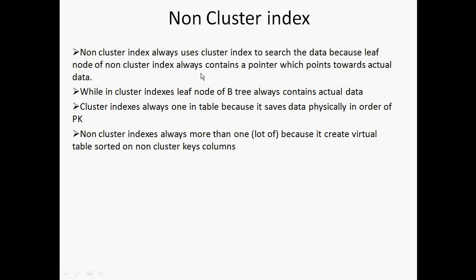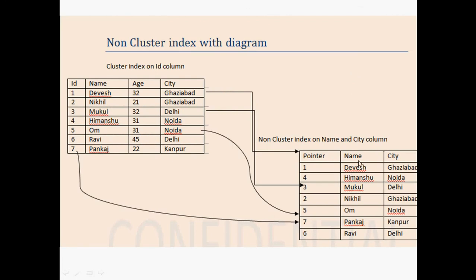As I mentioned, the non-clustered index always contains a pointer which points toward the actual data. This pointer is nothing but the primary key — the same key number that points towards the actual data. For example, for Devesh we have pointer number one, which points to ID one in the actual table where Devesh is stored.